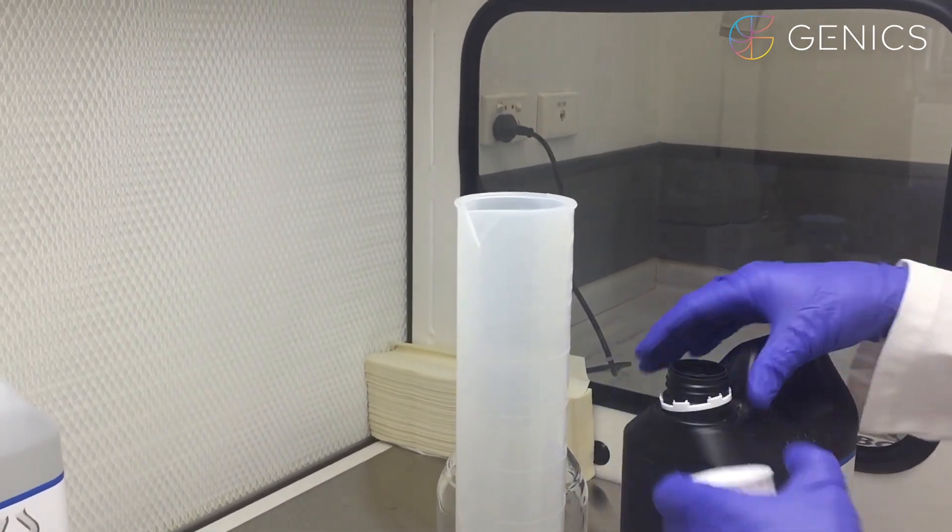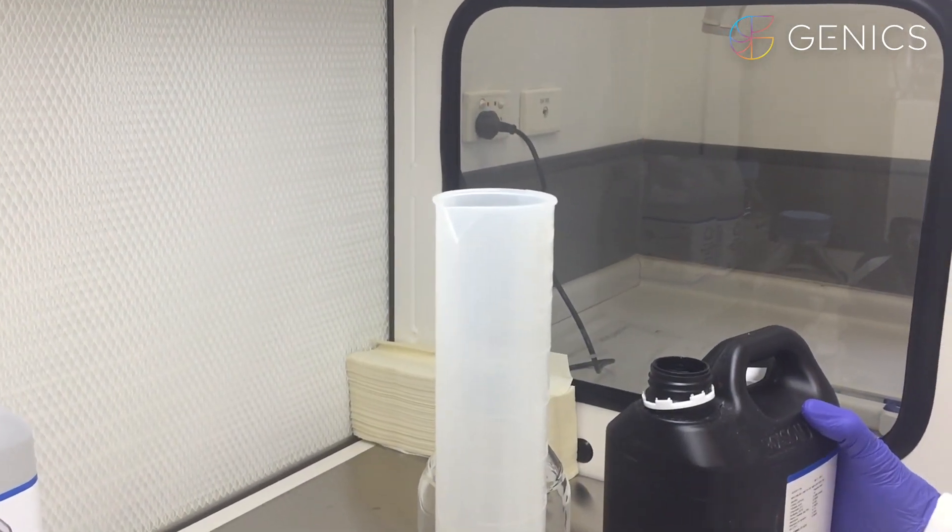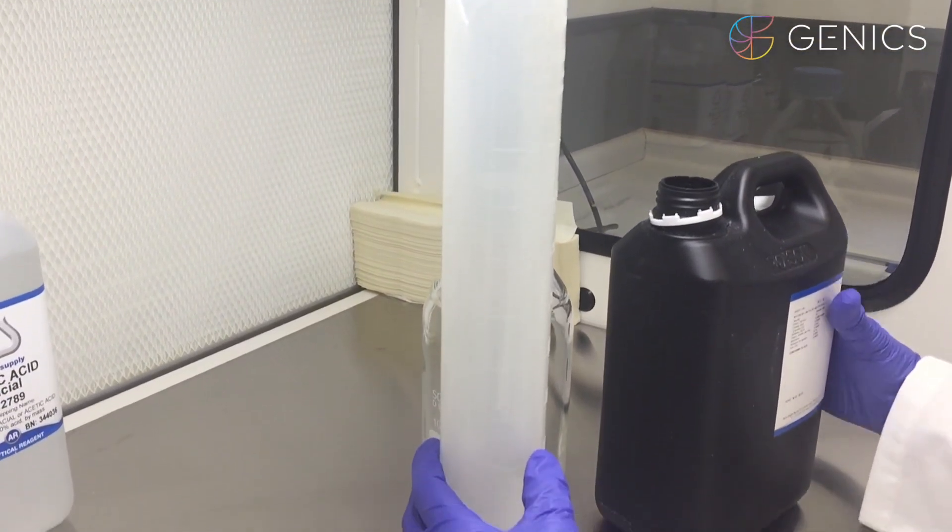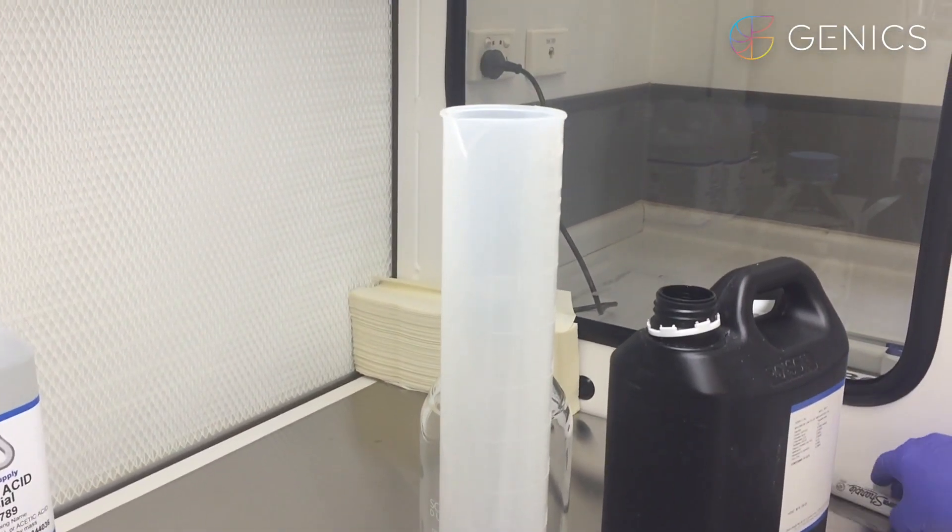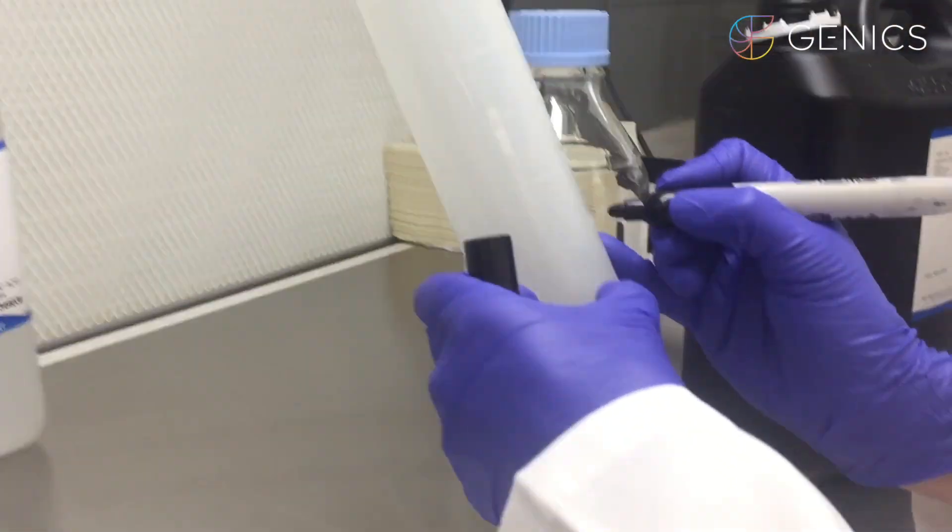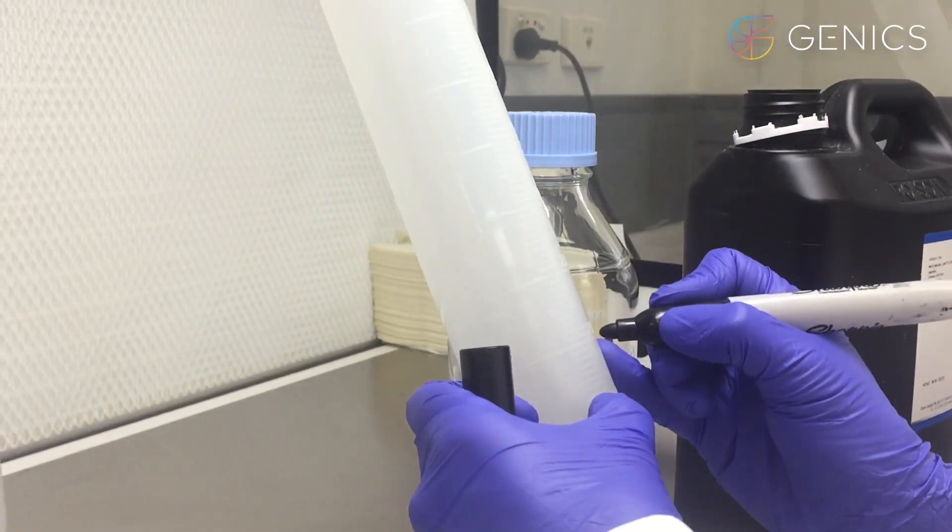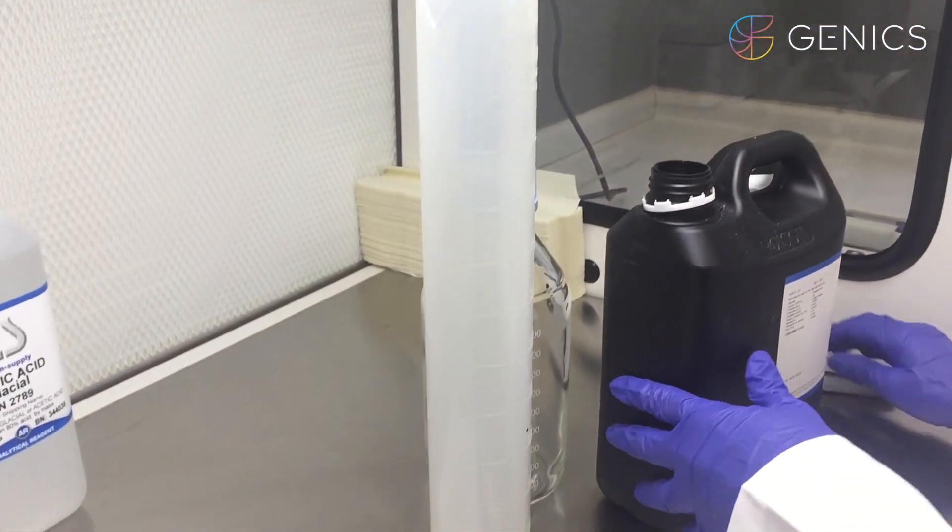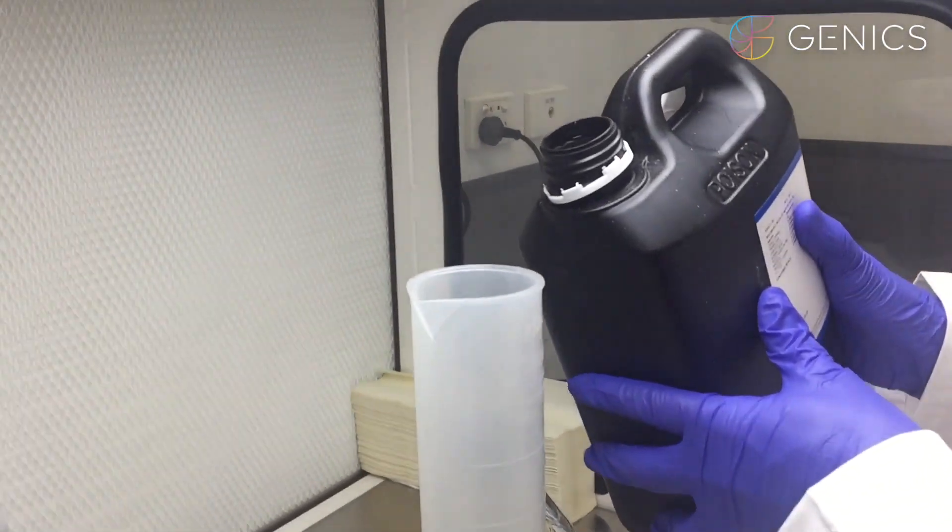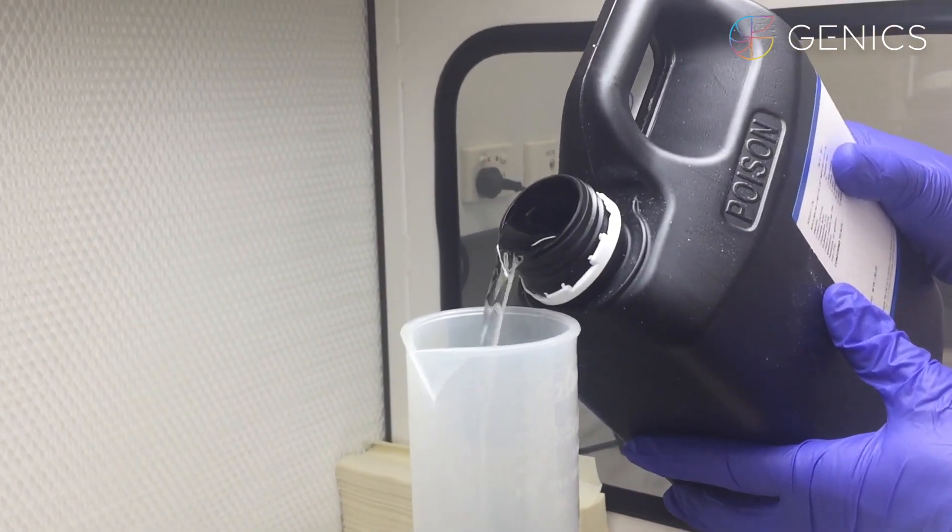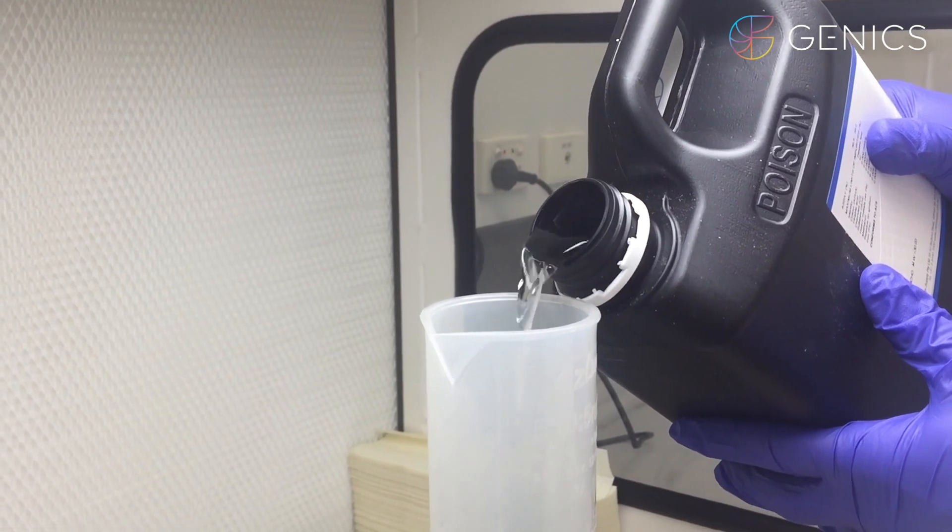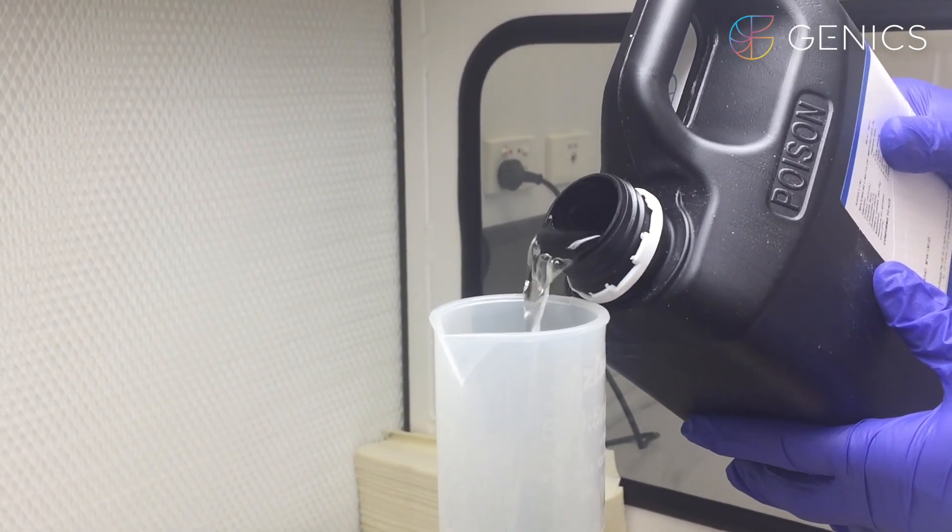It's very important to use safety equipment when pouring out these chemicals. So 220 mils will be here. I'm actually going to mark our measuring cylinder to make it easier.